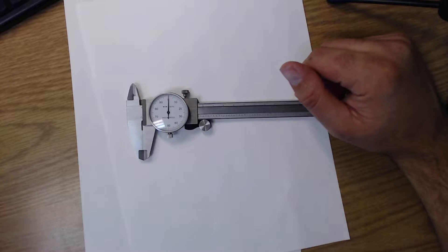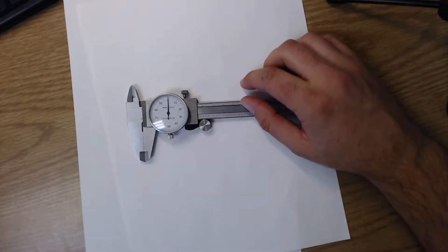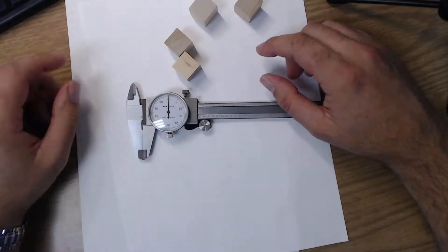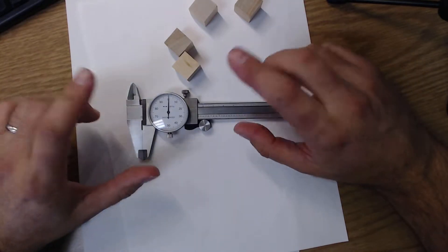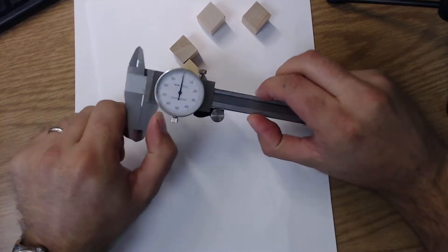But, take it out of the box, and I'm going to grab some stuff for us to measure. There's some blocks. Alright, first, we need to make sure that it is zeroed.